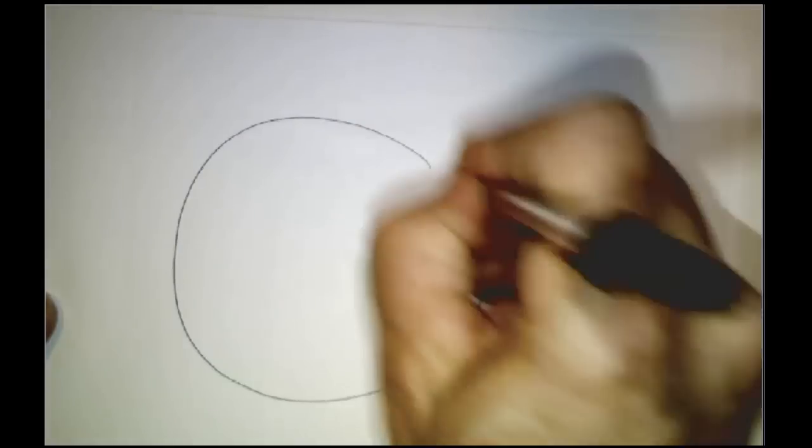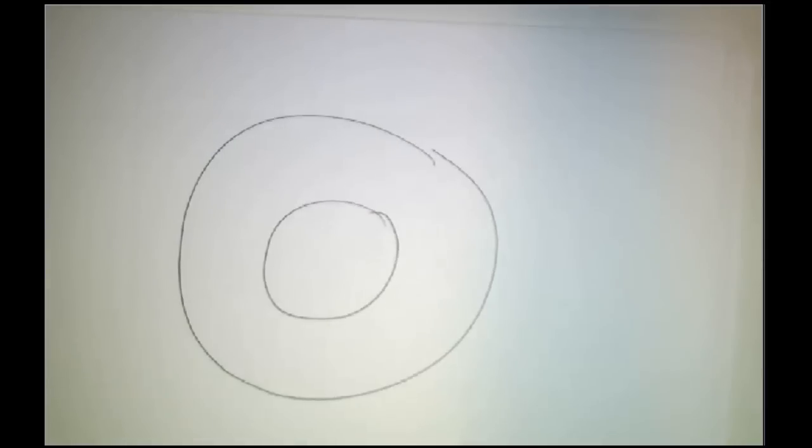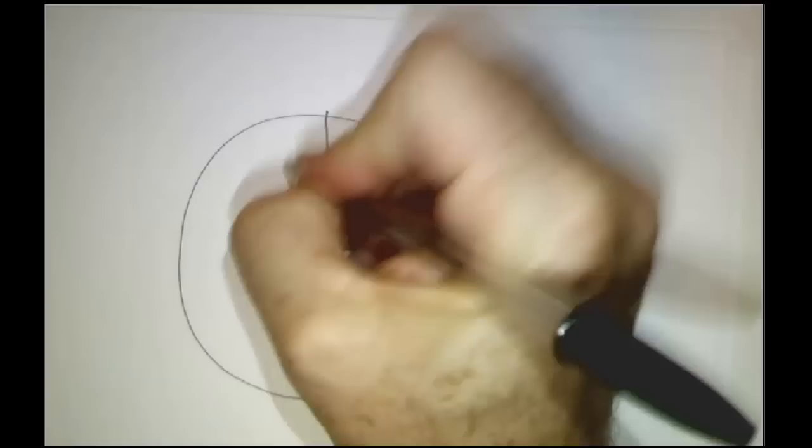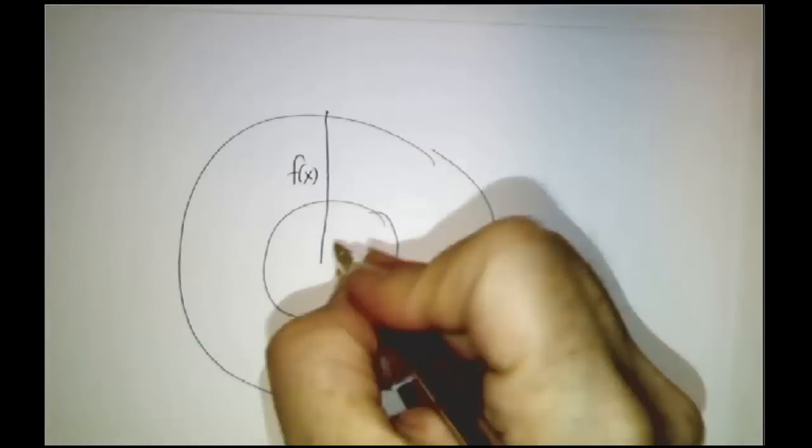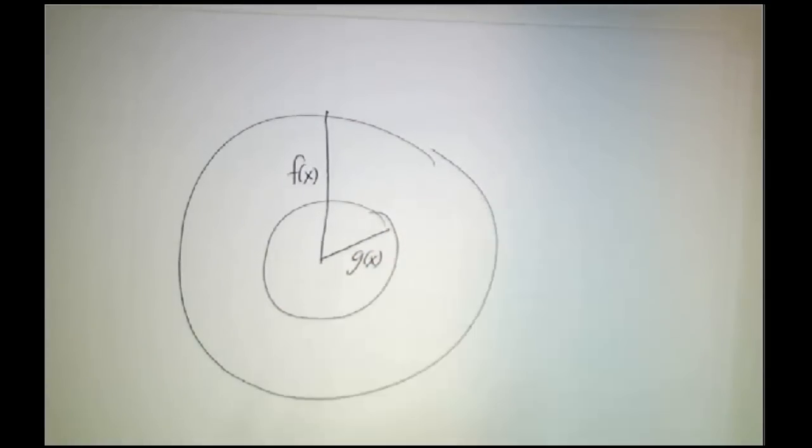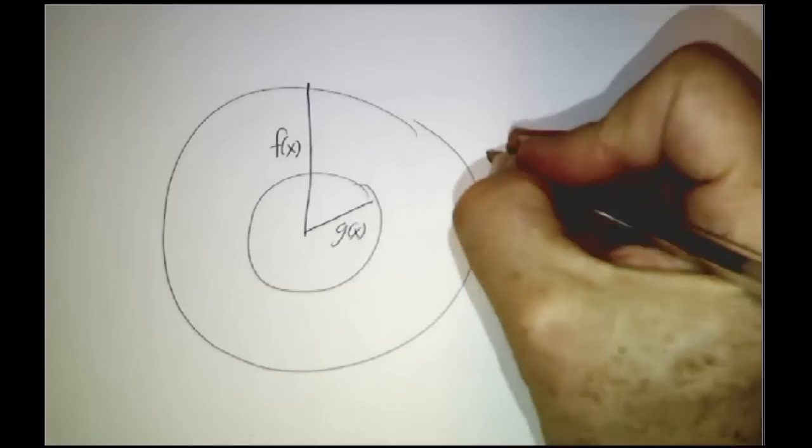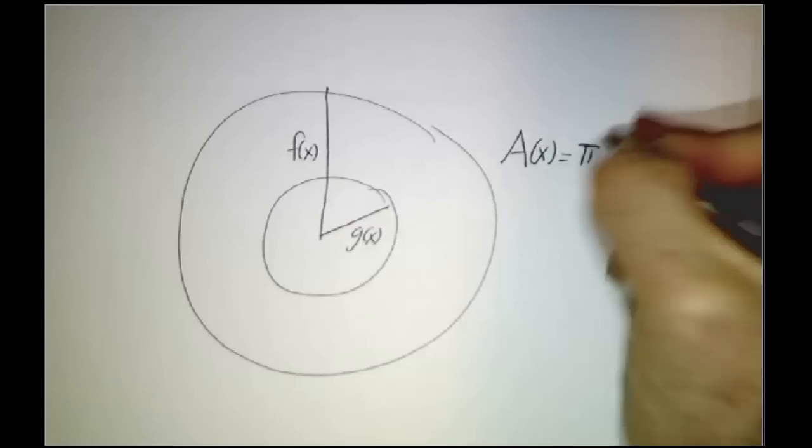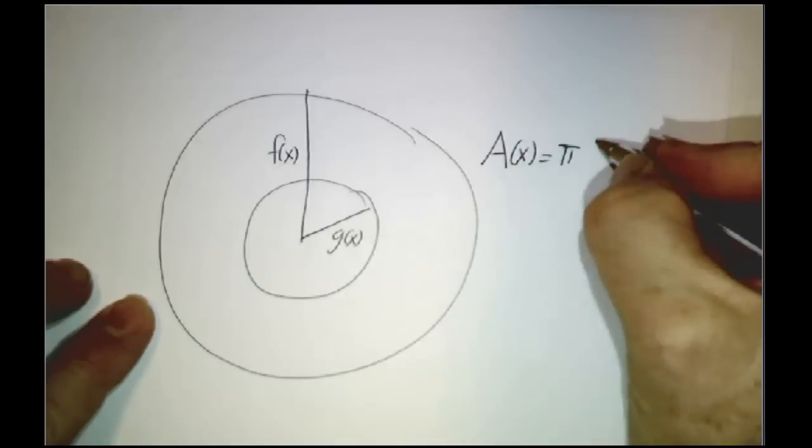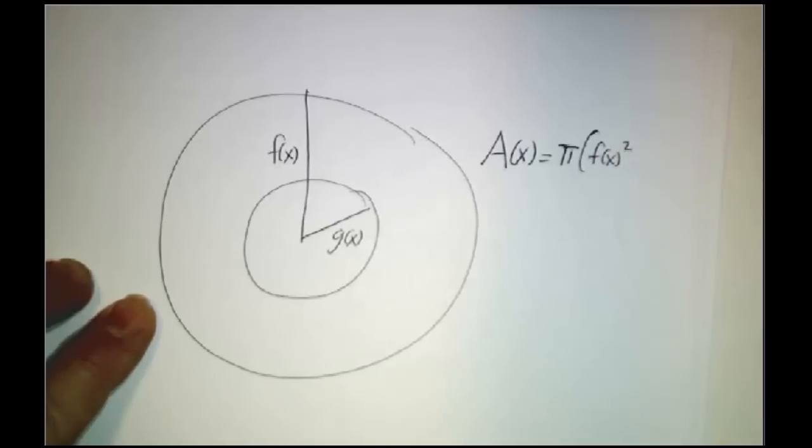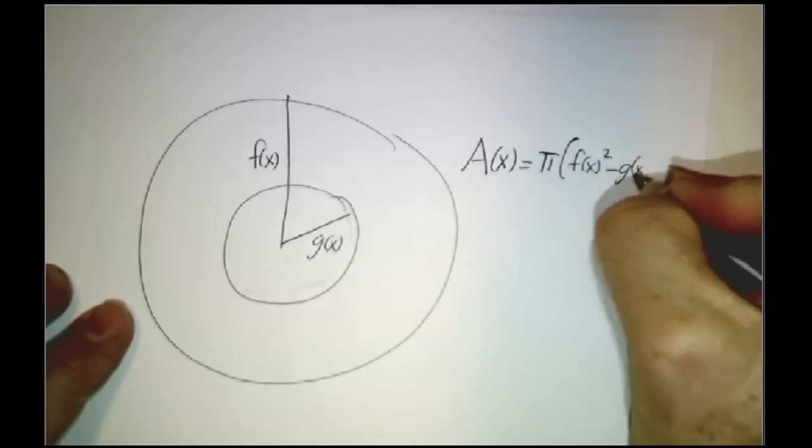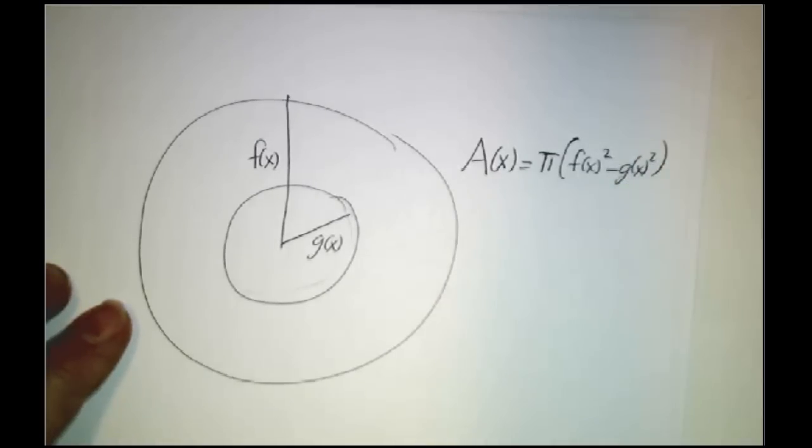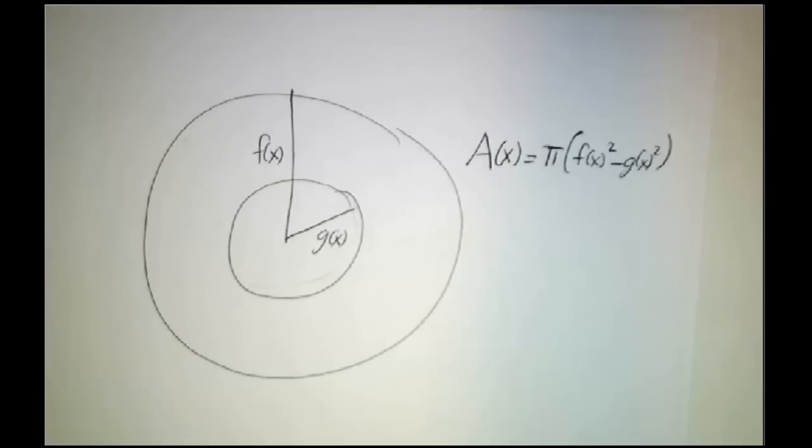So what we wind up with is something that has an inner radius and an outer radius. The outer radius is f of x. The inner radius is g of x. And so the area of the washer is the area of the big circle, that's pi f of x squared, minus the area of the inner circle. That's pi times g of x squared.